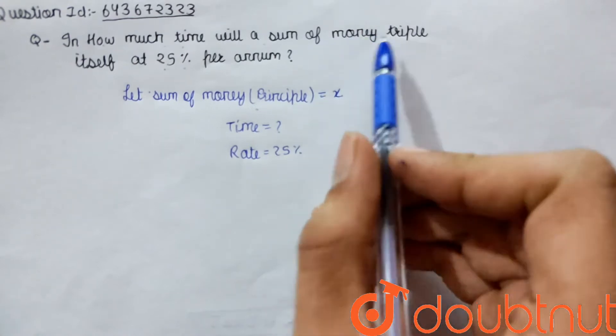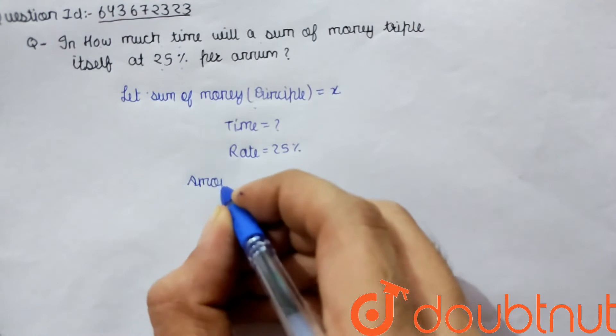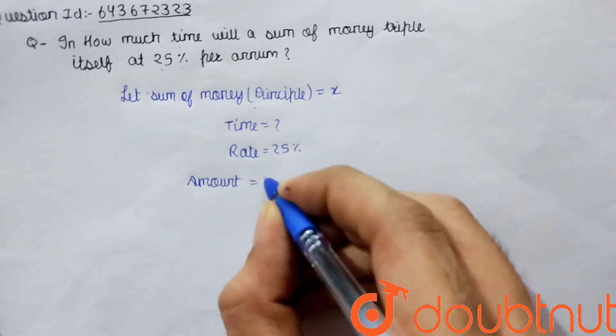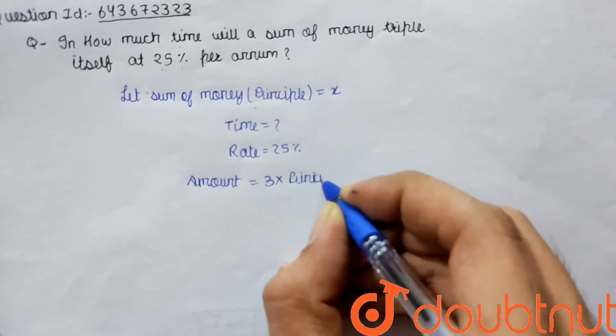They are saying it will triple itself. So the amount will be triple, which means three times the principal.